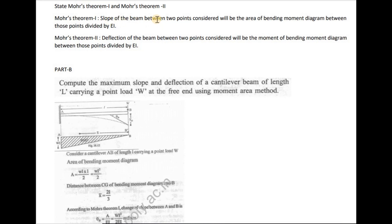The first theorem states: the slope of the beam between two points will be the area of the bending moment diagram between these two points divided by EI. The second theorem states: the deflection between two points will be the moment of the bending moment diagram area about that point, divided by EI.